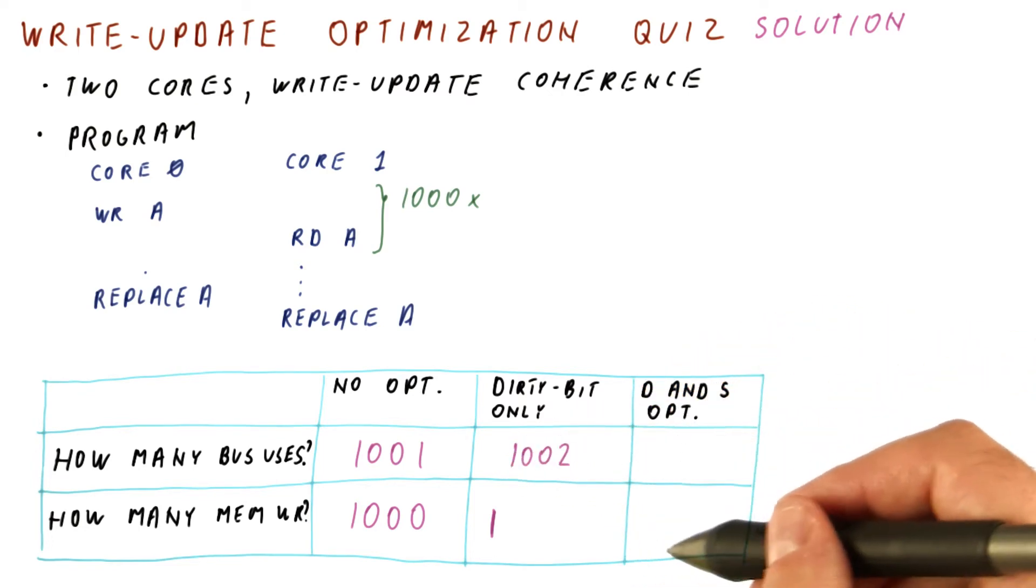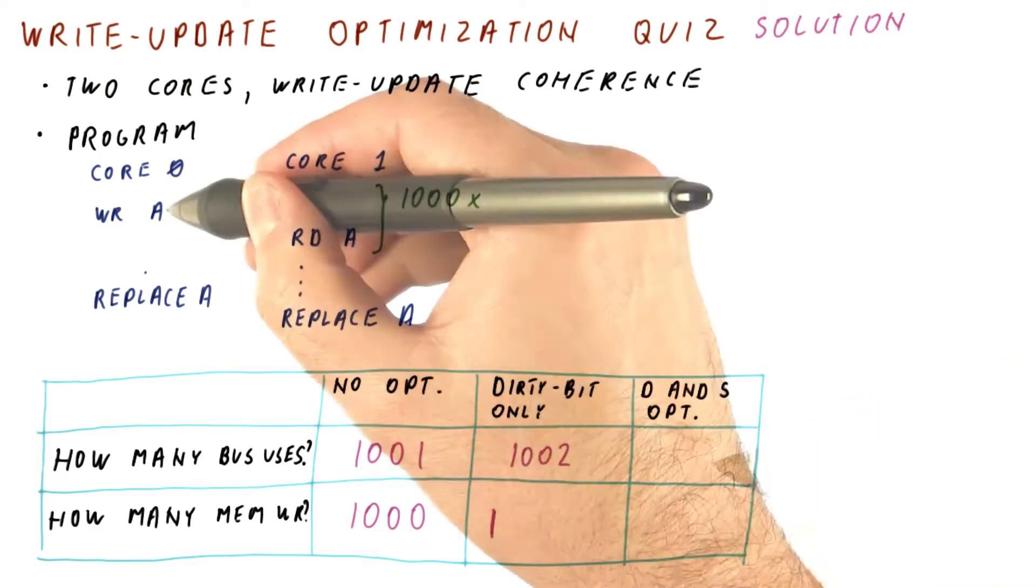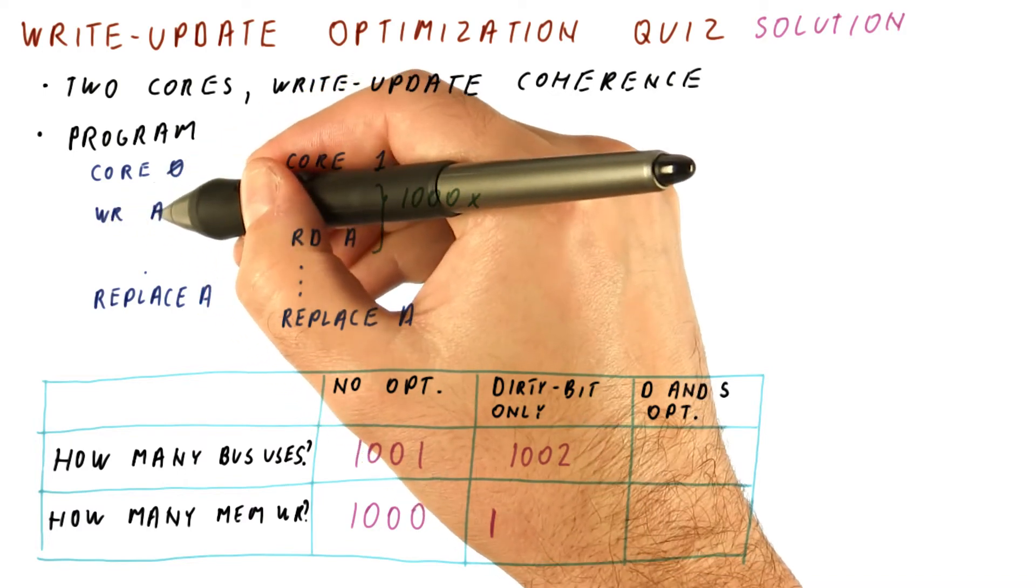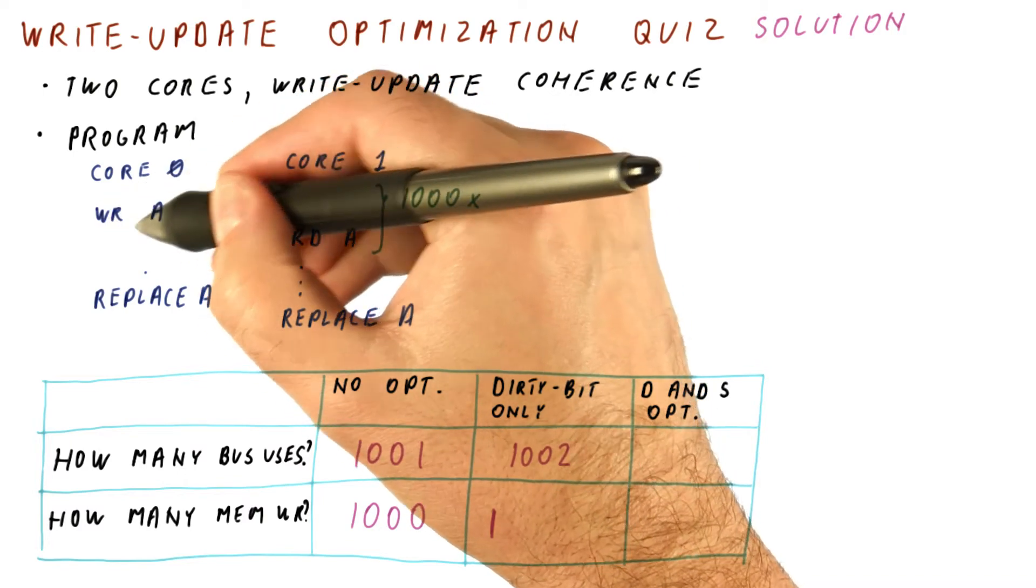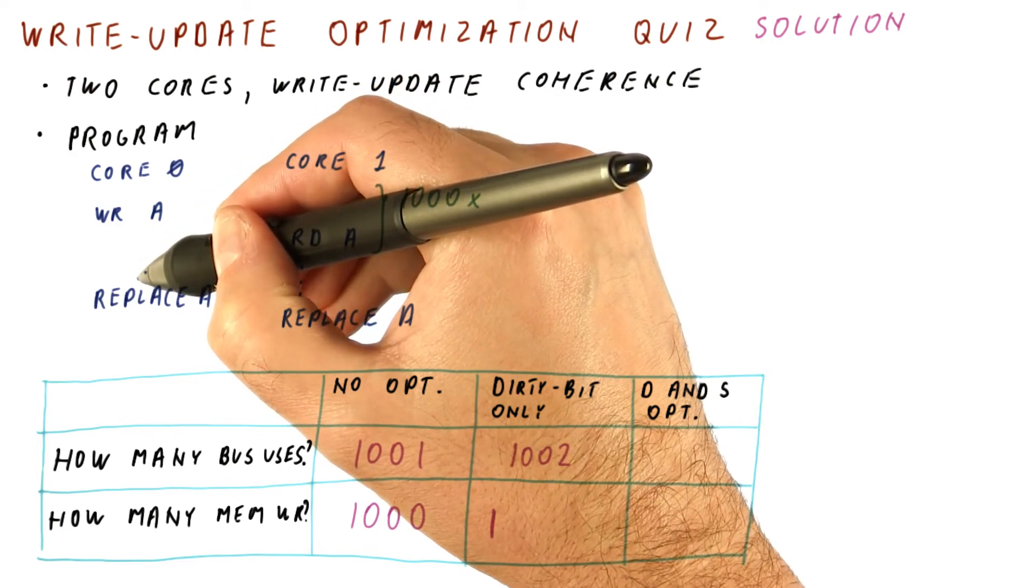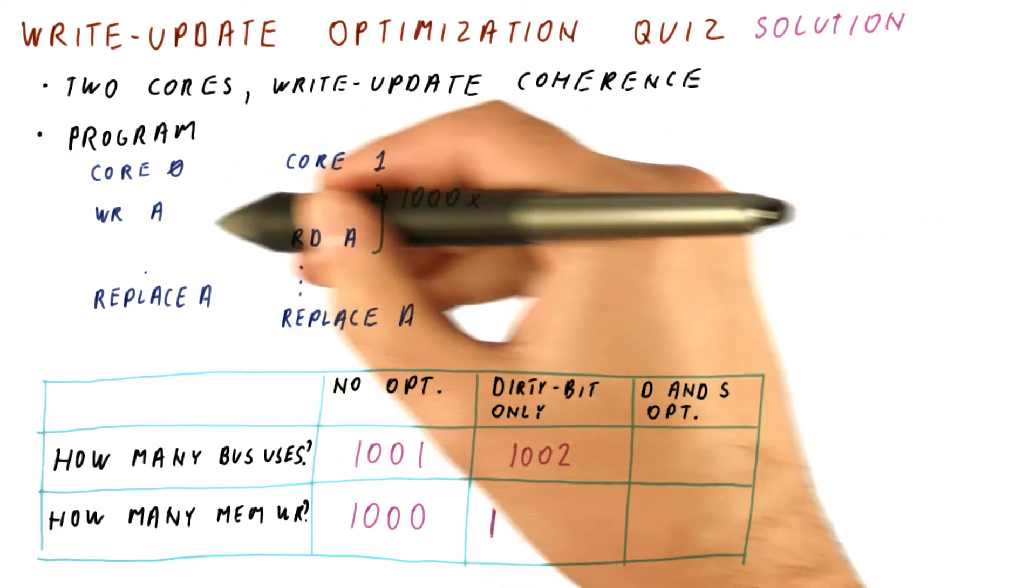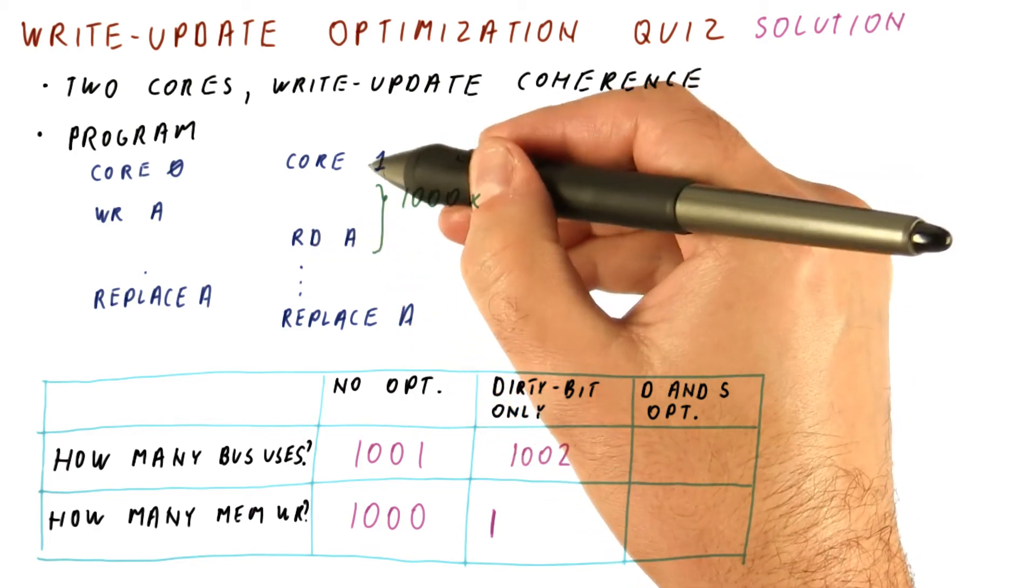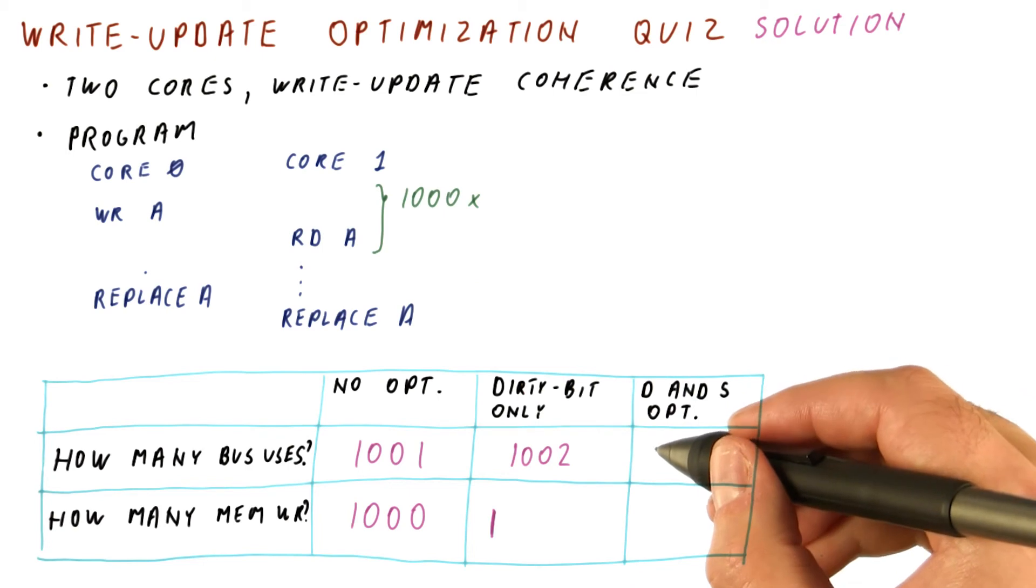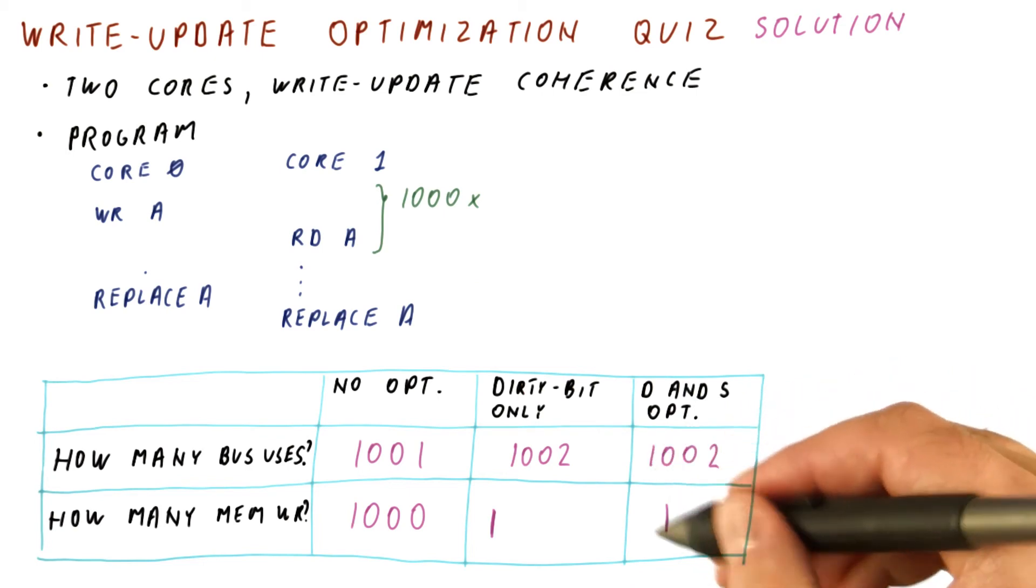Now let's see what happens with the dirty and shared optimization. We write here, and at this point, we are the only one who has this block, so the shared bit is not set. This would normally allow us to write to it without going to the bus anymore. But because the very next access is a read of A on core 1, the sharing starts. And that means that really, we have exactly the same number of bus uses and memory writes.